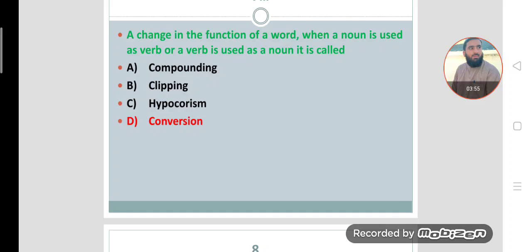Like, for example, chair. Chair is noun, but sometimes it functions like a verb. For example, who chaired the meeting? Our meeting was chaired by a principal. In this process, it is called conversion. A change in the function of a word, when a noun is used as a verb or a verb is used as a noun, it is called conversion.